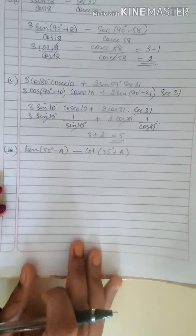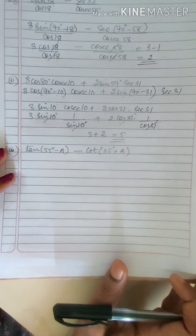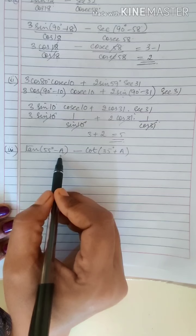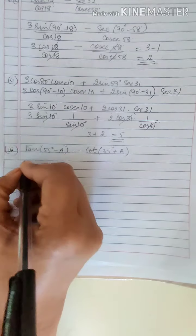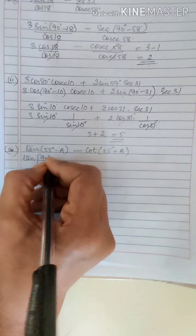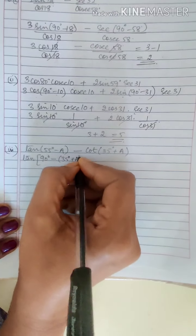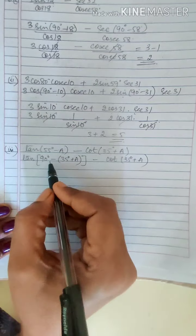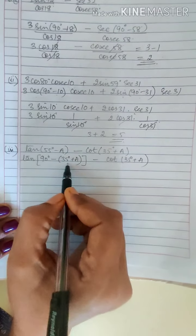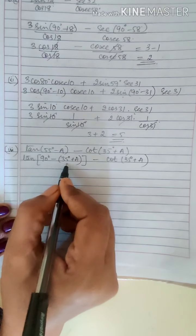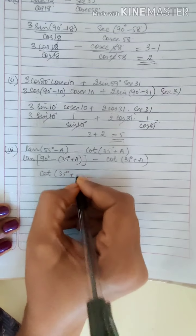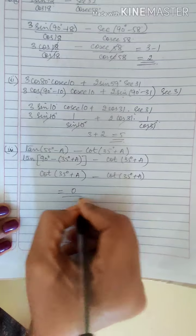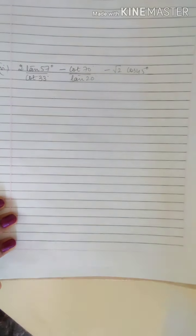Now the next one: tan(55 minus a) minus cot(35 plus a). If you observe, 55 minus a can be expressed as 90 minus (35 plus a). That is tan(90 minus (35 plus a)) minus cot(35 plus a). Since tan(90 minus theta) is cot theta, you get cot(35 plus a) minus cot(35 plus a) which is equal to 0.